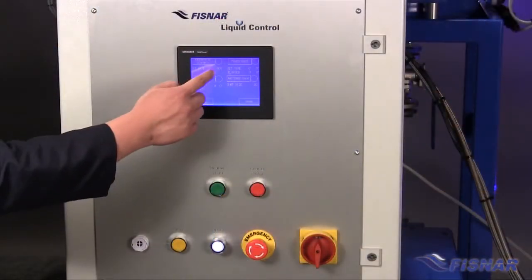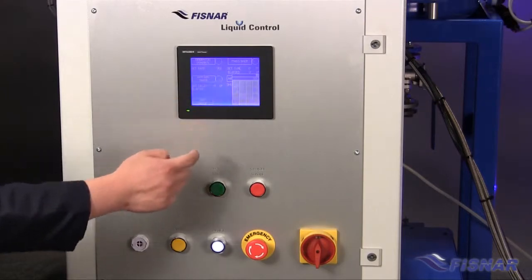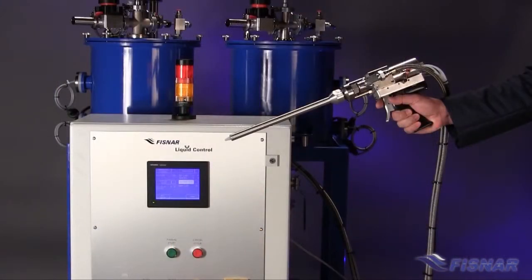Adjust the desired flow rate by entering a flow rate per minute into the digital control. The machine is now ready for production.